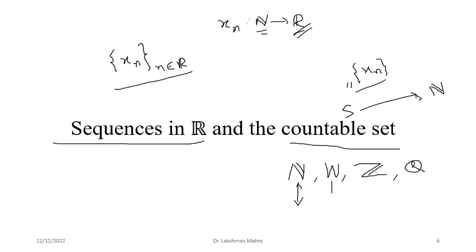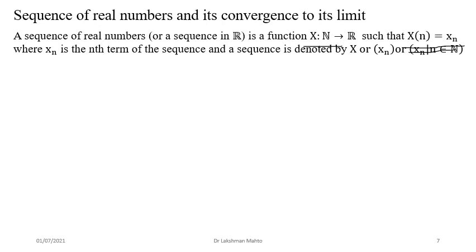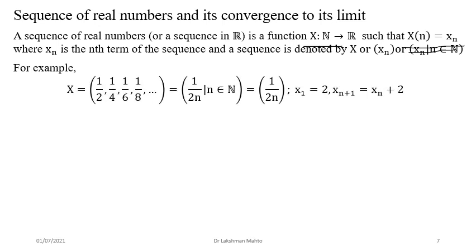A sequence of real numbers is a function from the set of natural numbers to ℝ, represented as {x_n}. The nth term is x_n. For example, if the nth term is 1/(2n), that is an infinite sequence. There is also an iterative sequence where the first term is given and x_{n+1} is a function of x_n — the next term is a function of the present term.